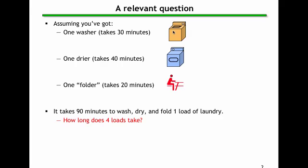Imagine you're doing laundry, and you have a washer which takes 30 minutes to wash one load of laundry. You have a dryer which takes 40 minutes, and you can fold the laundry in about 20 minutes. It'll take 90 minutes to wash, dry, and fold one load of laundry. How long will it take to do 4 loads?